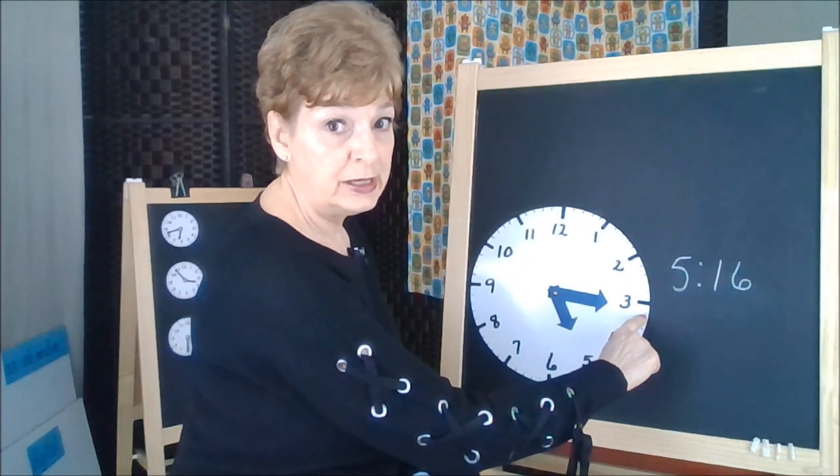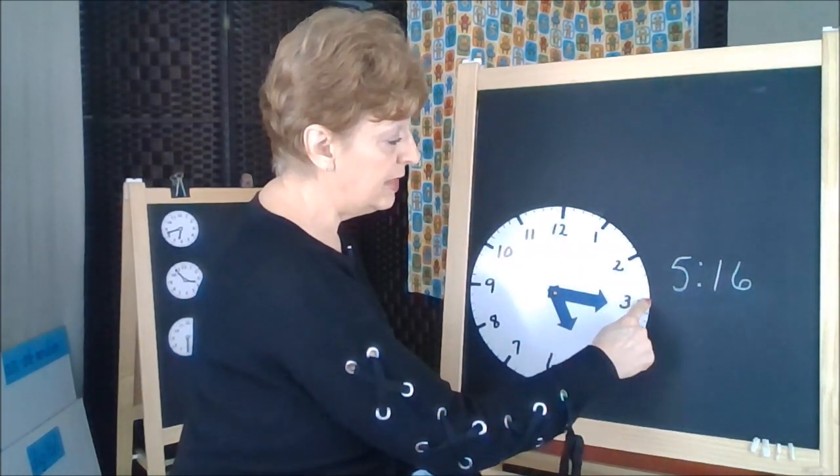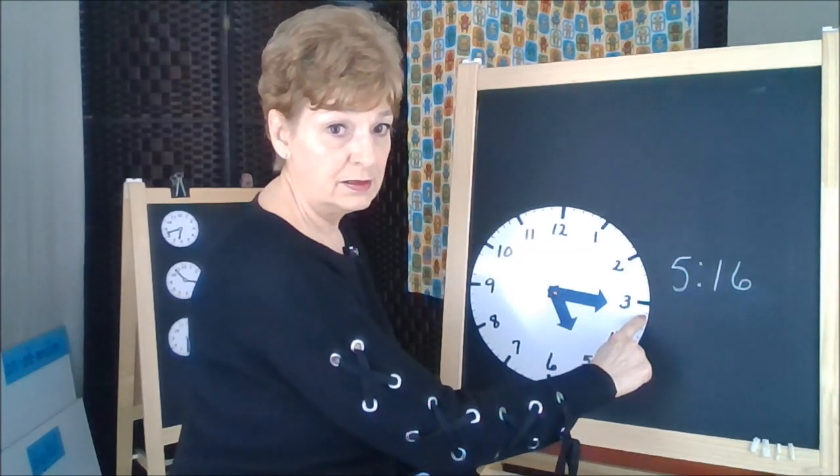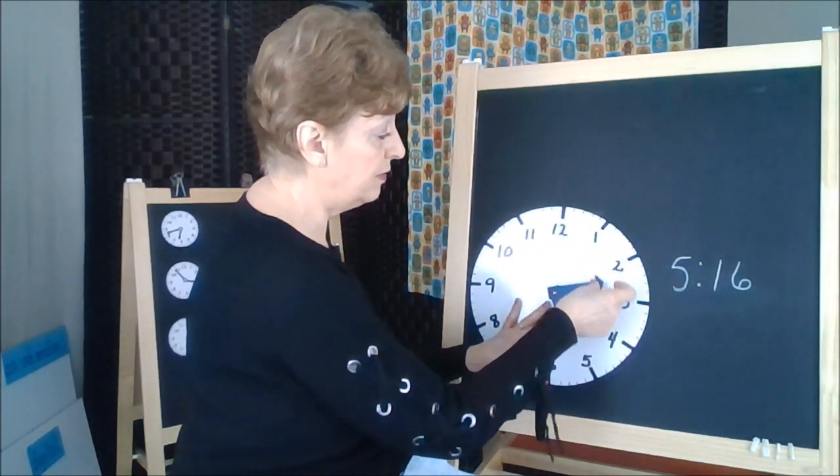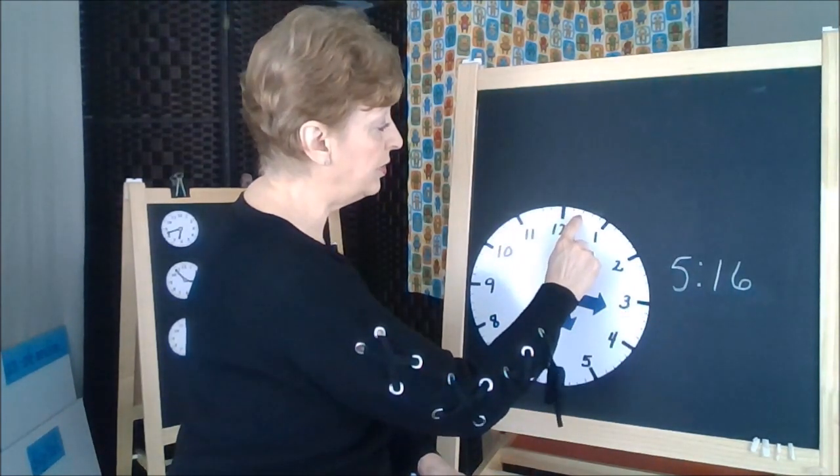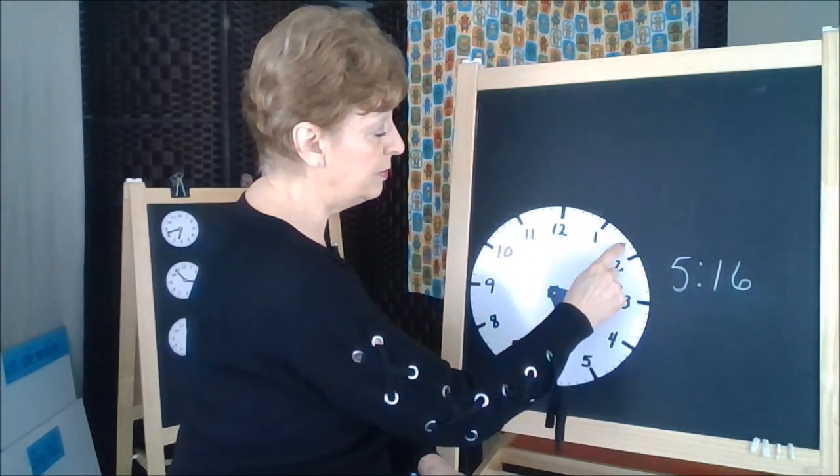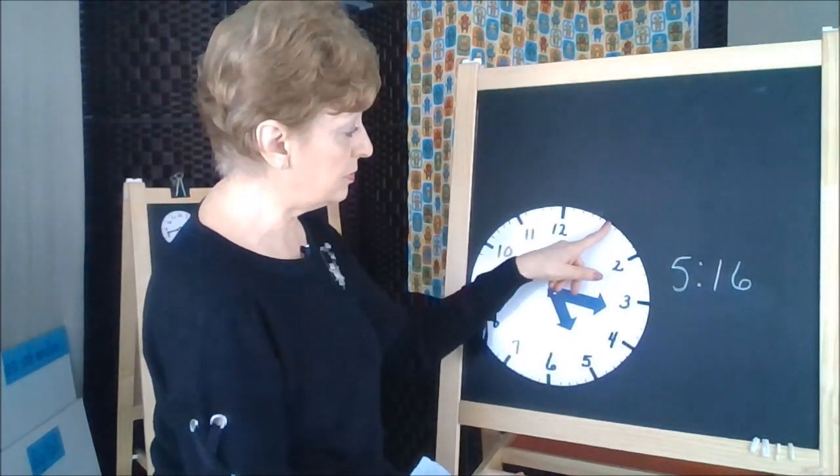We could, if you're good at counting by 5s: 5, 10, 15, and then one more is 16. So that would be a good idea too. You could go 5, 10, 15, and one more is 16. Or you can count all the small in-betweens to get to 16. Remember, these count too as 1.